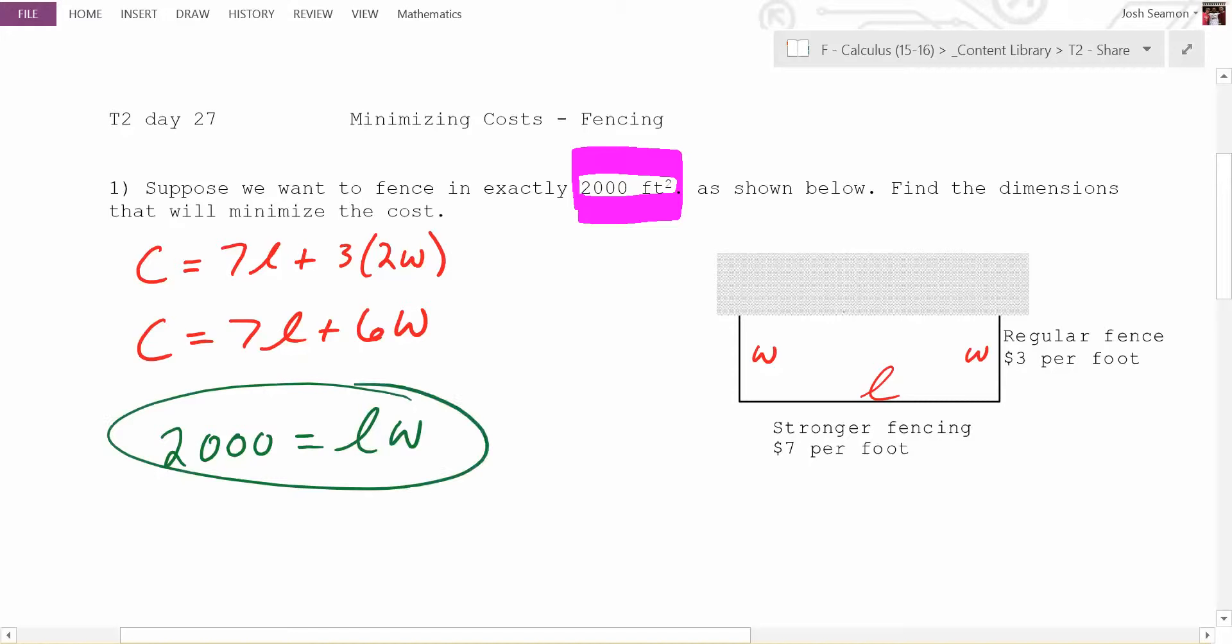So what can you solve for now? One of the variables. Which one? This is a choice. It doesn't matter which one. Which one do you want to solve for, L or W? W. So what does W equal, Leanna? 2,000 divided by L. So now, where can you take this? Where can you put that? Anywhere you want. You theoretically could, but where should you put it?